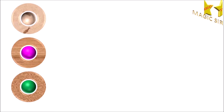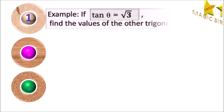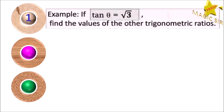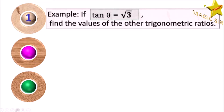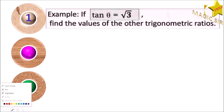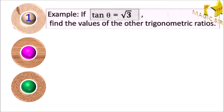Today we will discuss these three examples. First, if tan theta equal to root 3, find the values of the other trigonometric ratios. We will solve this by using the short method.